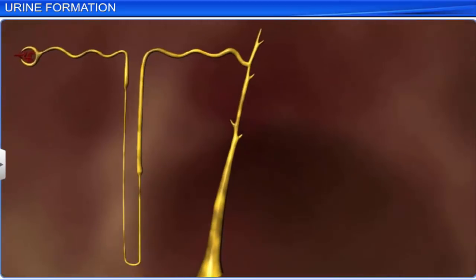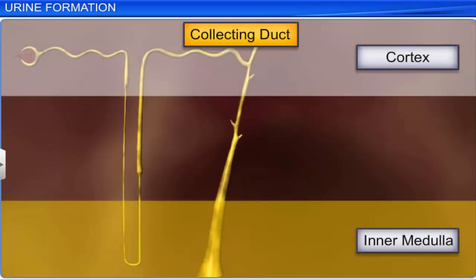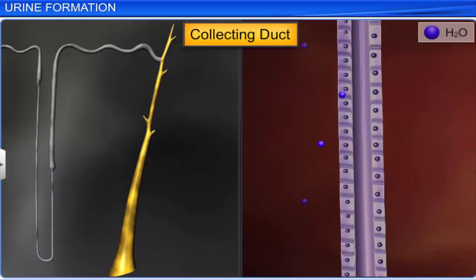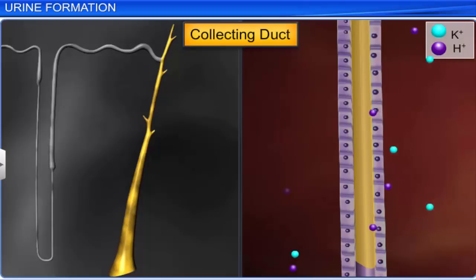The distal convoluted tubules of several nephrons open into a straight tube called the collecting duct, which extends from the cortex of the kidney to the inner parts of the medulla. The duct helps to reabsorb water, thereby increasing the concentration of urine according to the body's state of hydration. It also maintains osmolarity by enabling small amounts of urea to pass into the medullary interstitium. Further, it selectively secretes hydrogen and potassium ions and maintains the ionic and pH balance of blood.